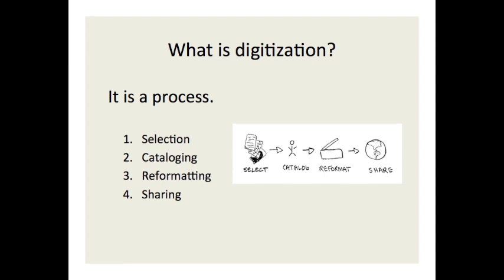To answer these questions, we need to understand what it means to digitize something. It is more than just scanning stuff — it is an entire process of steps and each step is important. The first step is to select the items you would like to share. The second step is to catalog the items with information that will help make them discoverable. The third step is to reformat the items to make them shareable. And the final step is the key step: share the content with an audience.